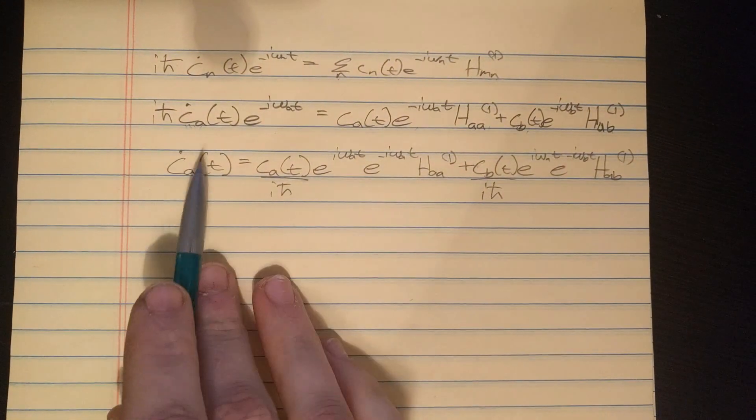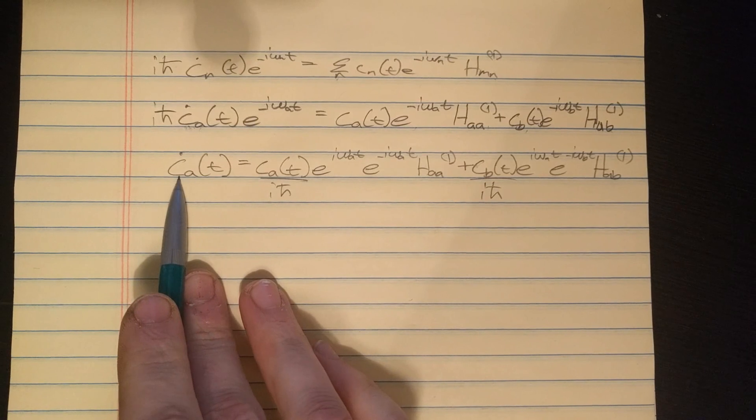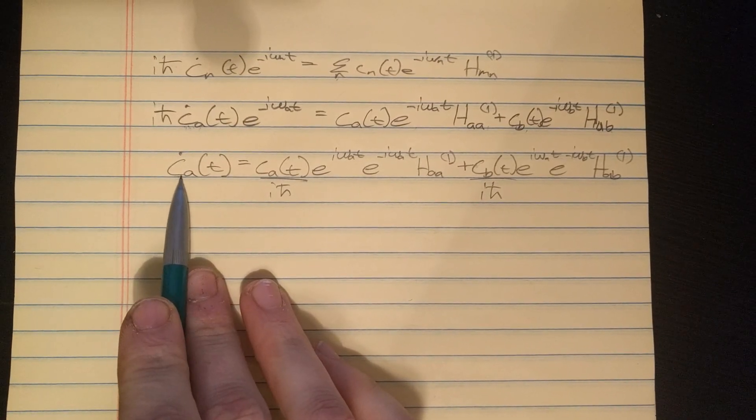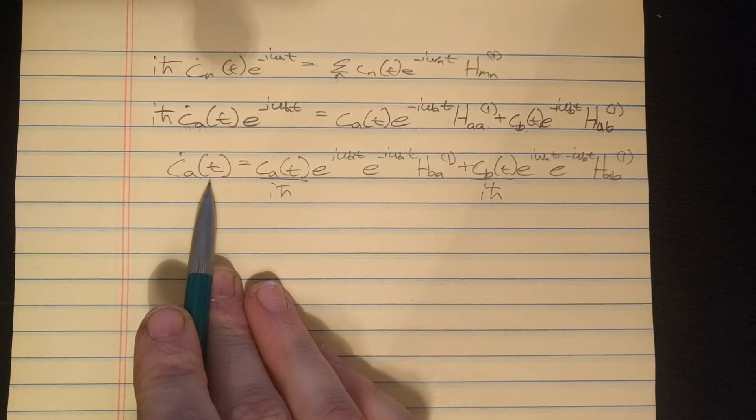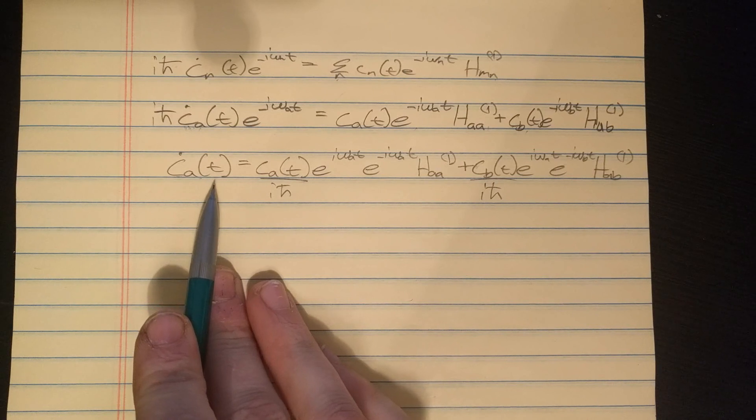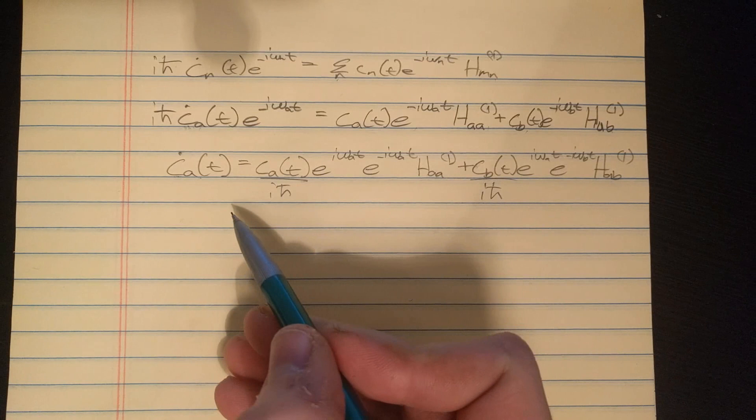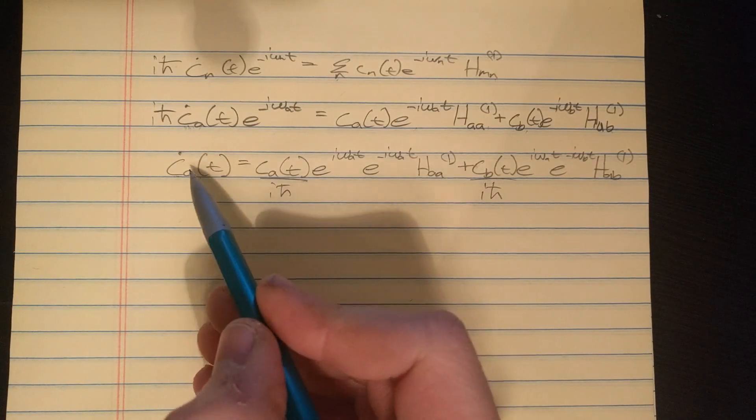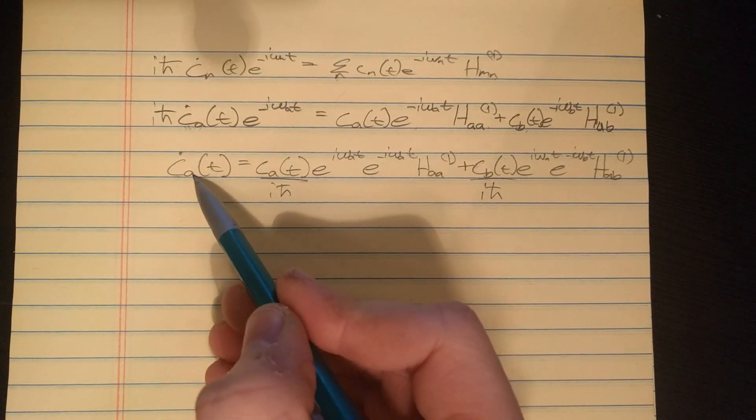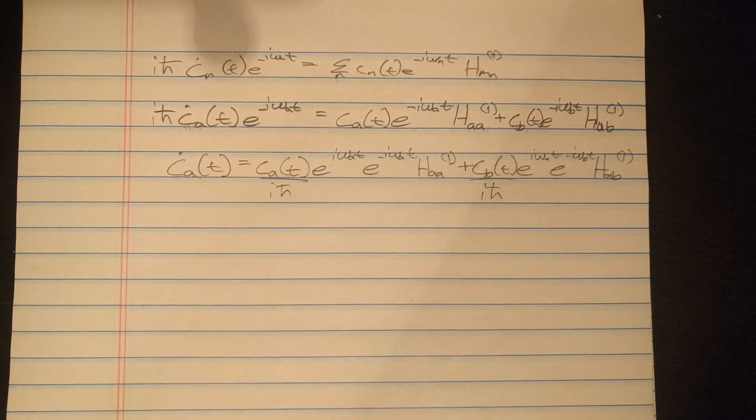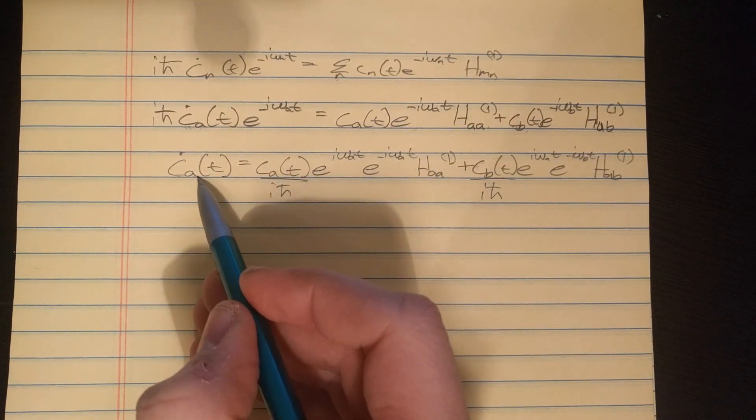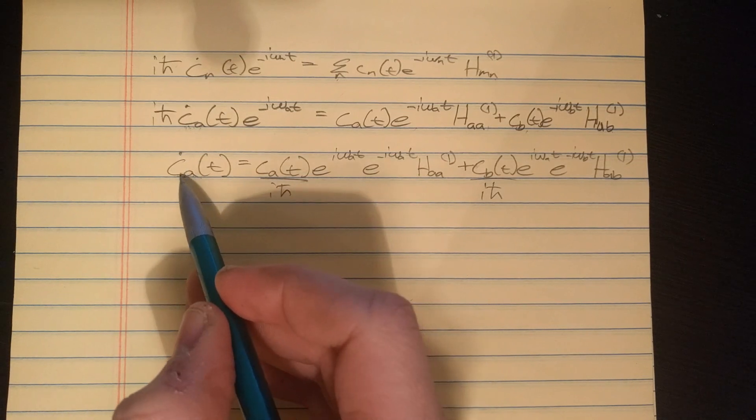What I did was for n I plugged in a, and that's where I got this term. And in the second term I plugged in b for n. So that's why we have c sub b, and then this n over here was turned into a b, and the m's I called a. Now we're going to solve for the time derivative of c sub a, and then I'll just rewrite everything with b, and it would turn out the same.